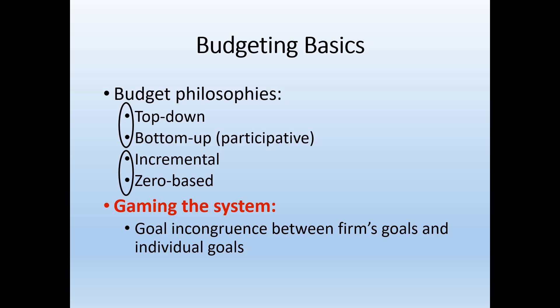It's human nature to try to game the system — not because people are thieves or cheaters, but because what individuals want and what the firm wants happens to be different. The firm wants a realistic and efficient budget, while individuals don't want to get in trouble and do want to get their bonus at the end of the period. So managers have to work on creating a good relationship with their subordinates and try to encourage them to give realistic budget numbers.